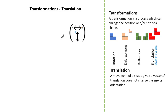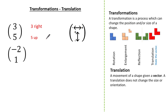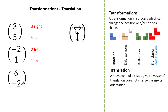Let's look at some examples. Here we have a vector where the number on the top is a positive 3, so we're moving right 3, and the number on the bottom is a positive 5, so we're moving 5 up. Looking at another example, the vector has negative 2 on top and positive 1 on the bottom, meaning 2 to the left and 1 up. In this last example we have 6 and minus 2, which means 6 to the right and 2 down.